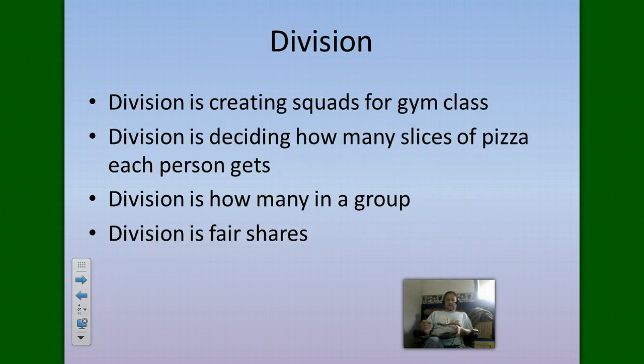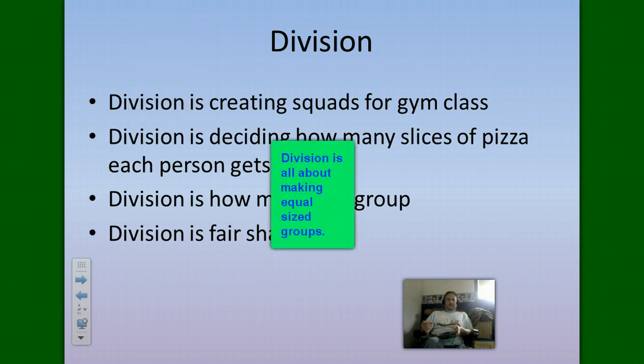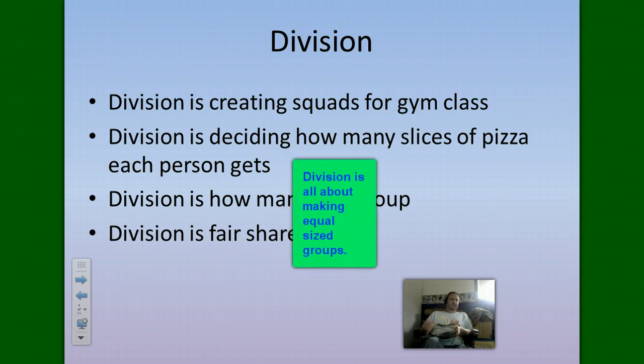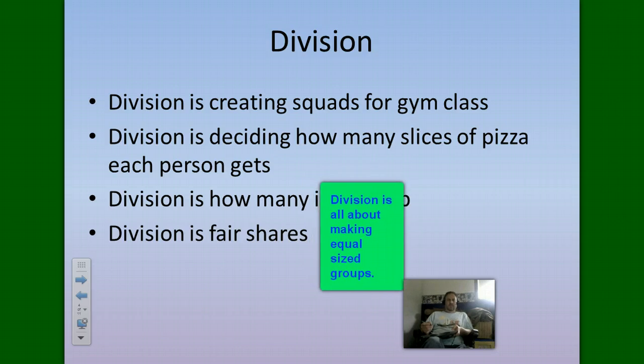Division is creating squads for gym class, and you want your squads in gym class to be equal sized. Division is deciding how many slices of pizza each person gets. So if you have a group of friends over and you're going to have pizza, everybody's probably going to want to eat the same amount, so you got to break that into equal proportions.